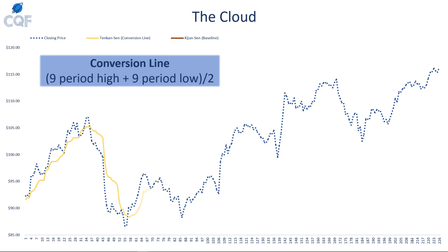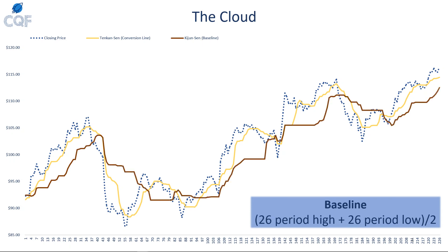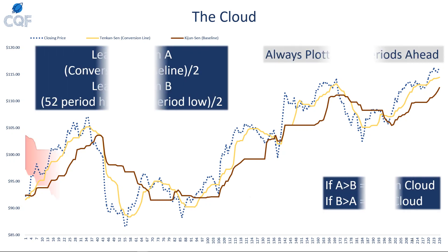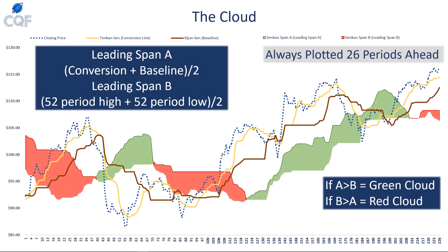First, let's plot the conversion line. It is the nine-period high plus the nine-period low divided by two, so we need nine periods before period one to calculate it. As you can see, it moves and reacts pretty quickly to price. The baseline is the 26-period high plus the 26-period low divided by two, and it moves a lot slower than the conversion line because it has a longer look-back period.